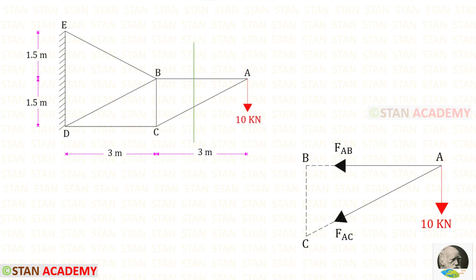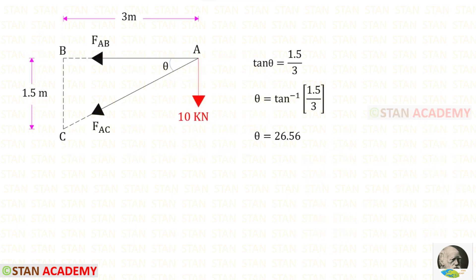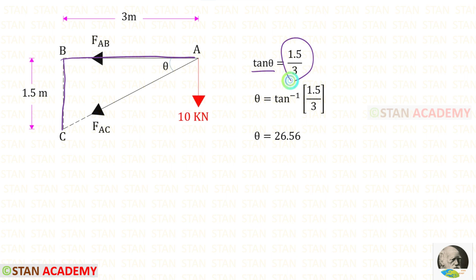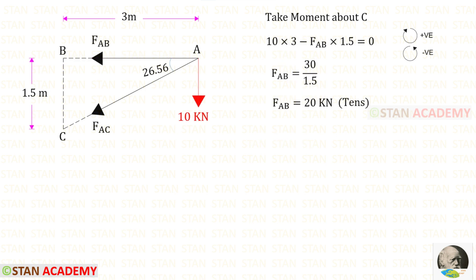In this truss, I am going to make the first section like this and take the right-side portion for analysis. We need to find this angle — let us keep this angle as theta. Using the tan theta formula, where tan theta equals opposite side by adjacent side, we can find theta to be 26.56°.